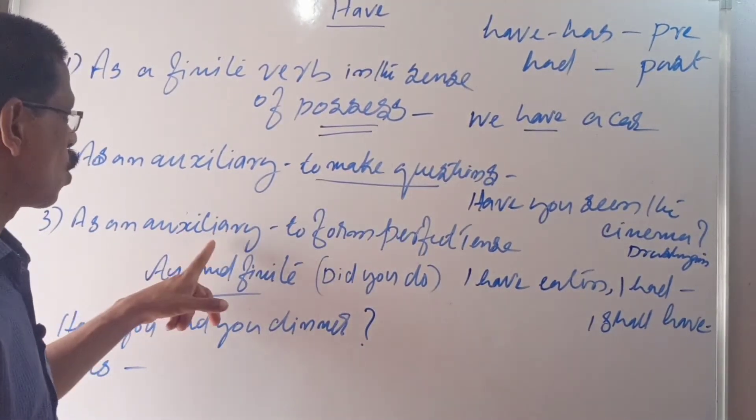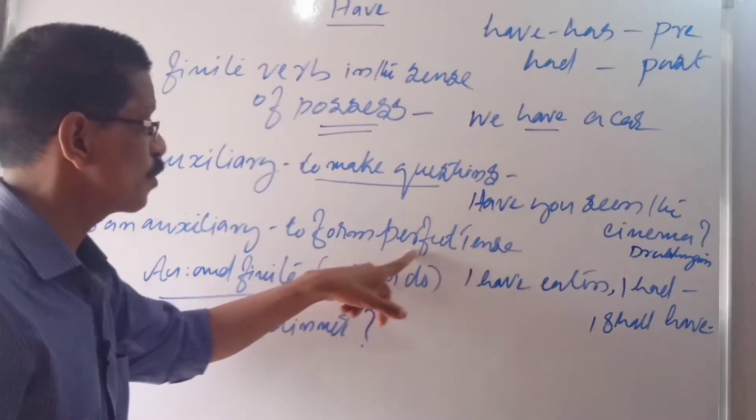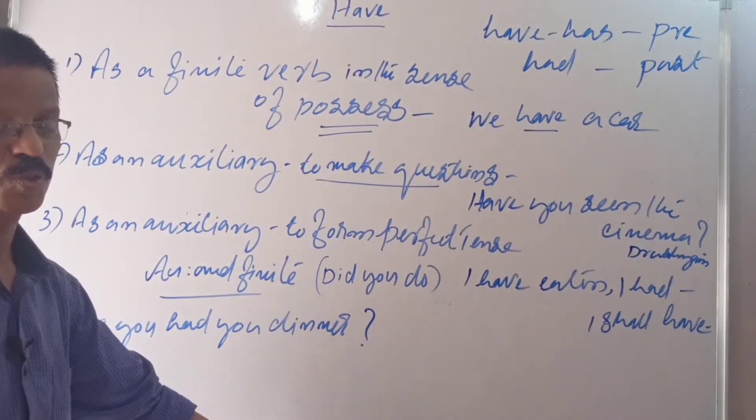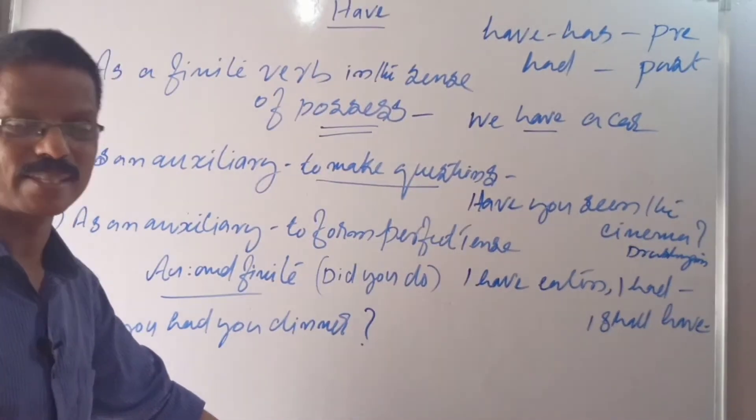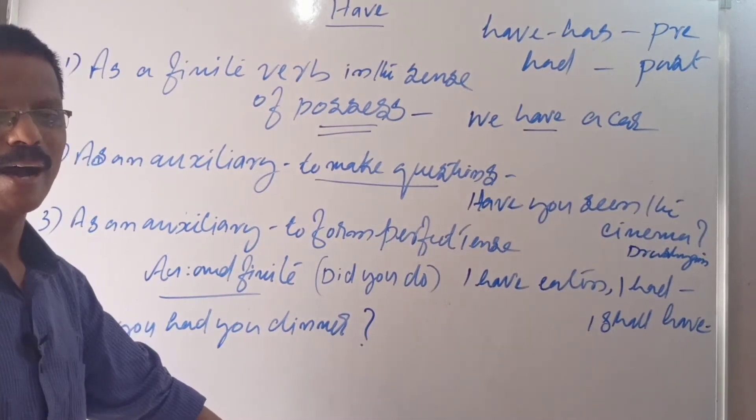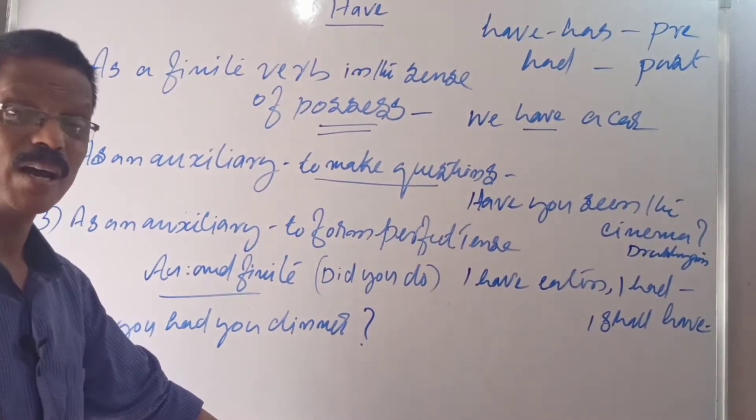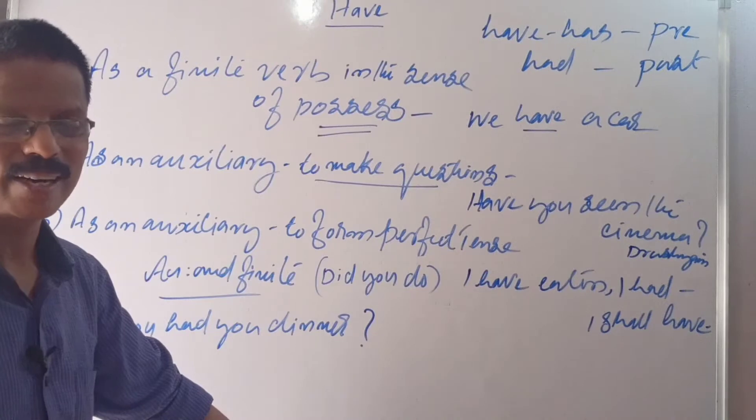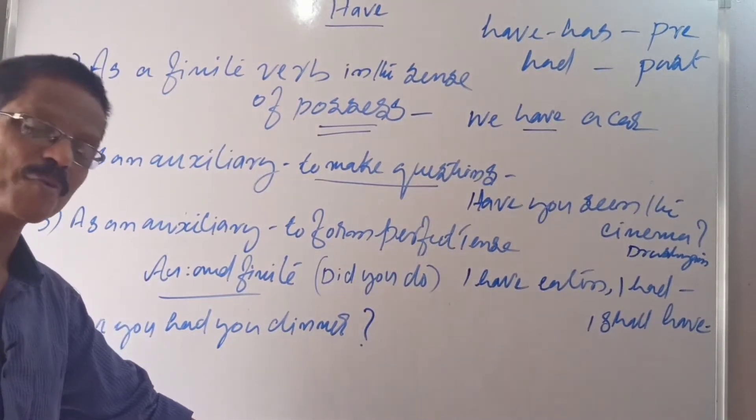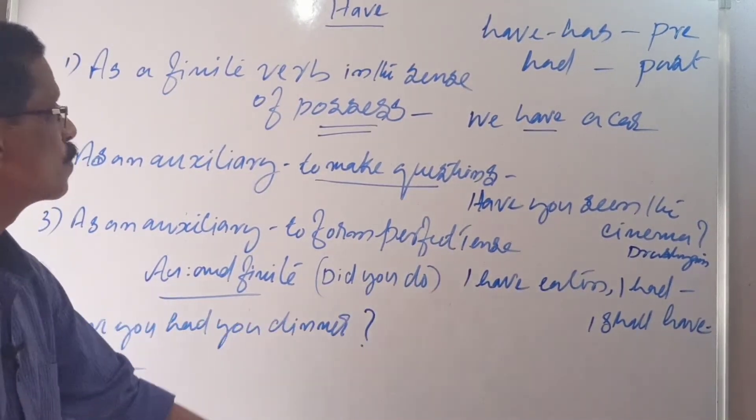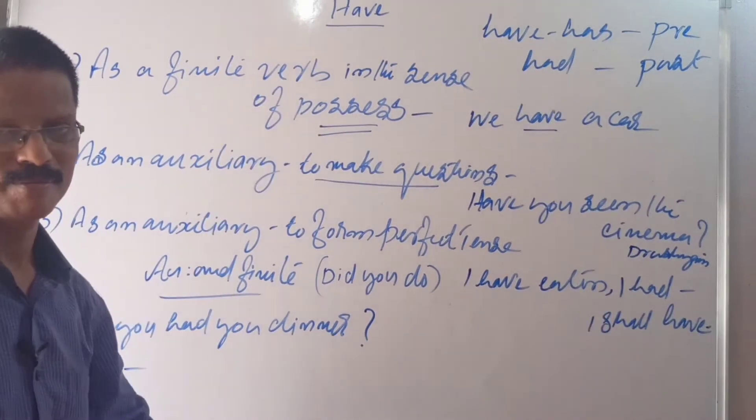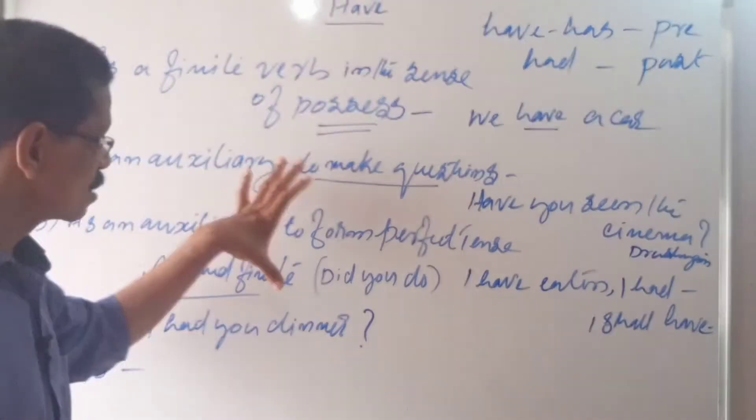And third one, again as an auxiliary to form perfect tense. I have written. I shall have written. He has written. He had written. He will have written. Perfect tense to form, this have is used.